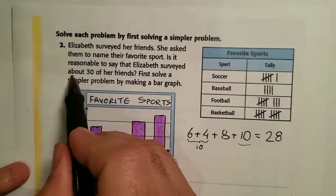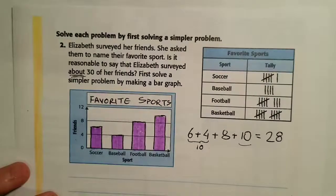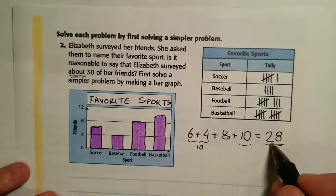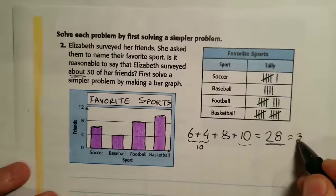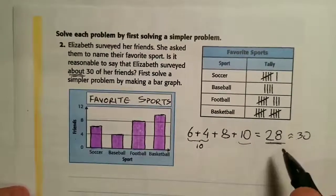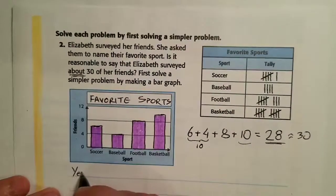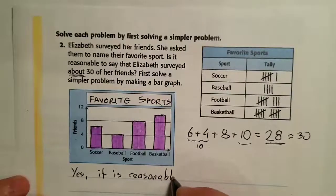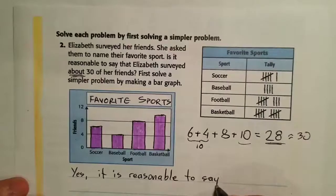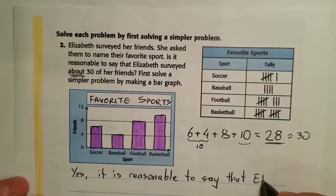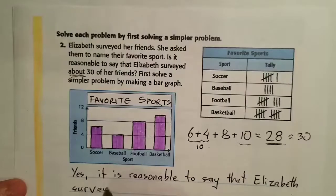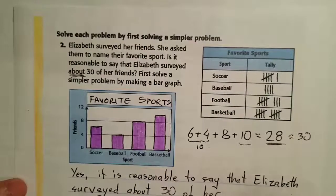Six plus four is ten, then ten plus ten is twenty, and twenty plus eight is twenty-eight. It's asking about 30 — not exactly 30, but about 30. If I round twenty-eight to the nearest ten, that will be exactly 30. So yes, it is reasonable to say that Elizabeth surveyed about 30 of her friends.